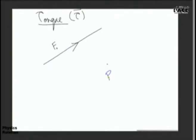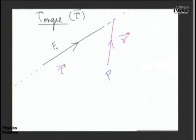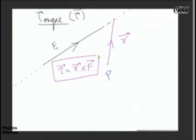This is the line of action of this force. Join any point on the line of action of force with point P, and call this vector R. The torque due to this force about this point will be given by tau equals R cross F. This is the vector form — the most general form of finding the torque of a force about any point in space.